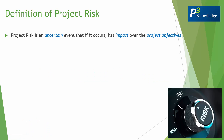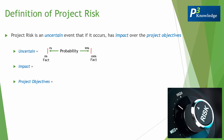Project risk is an uncertain event that, if it occurs, has impact over the project objectives. We have here three highlighted words. The first is 'uncertain' — it means it has a probability, and this probability or likelihood has a 1% to 99% chance of happening. So what about 0% or 100%? They're actually considered certainty or fact, and of course the way we treat facts or certainty is quite different than the way we treat risks.